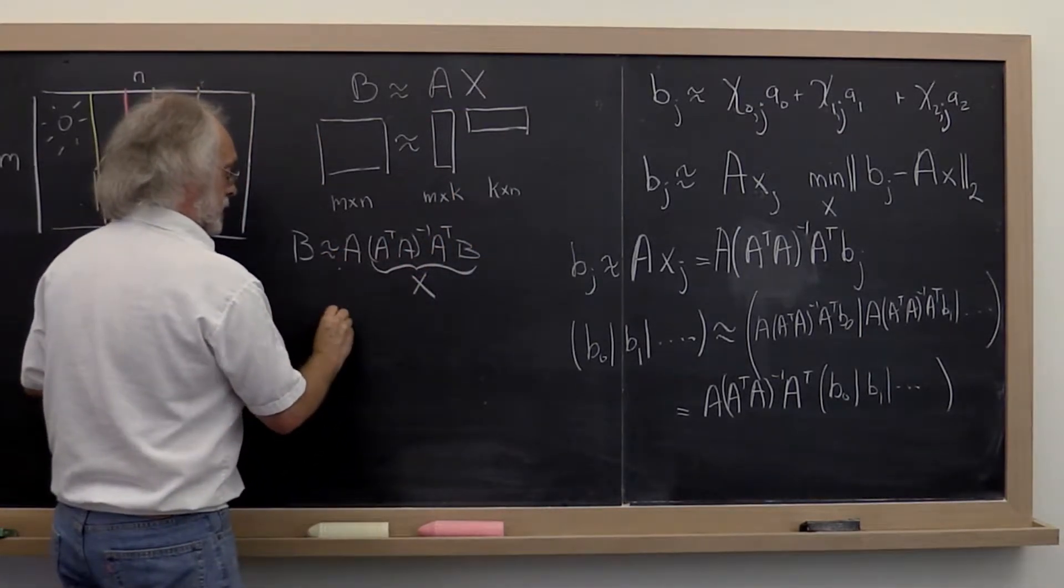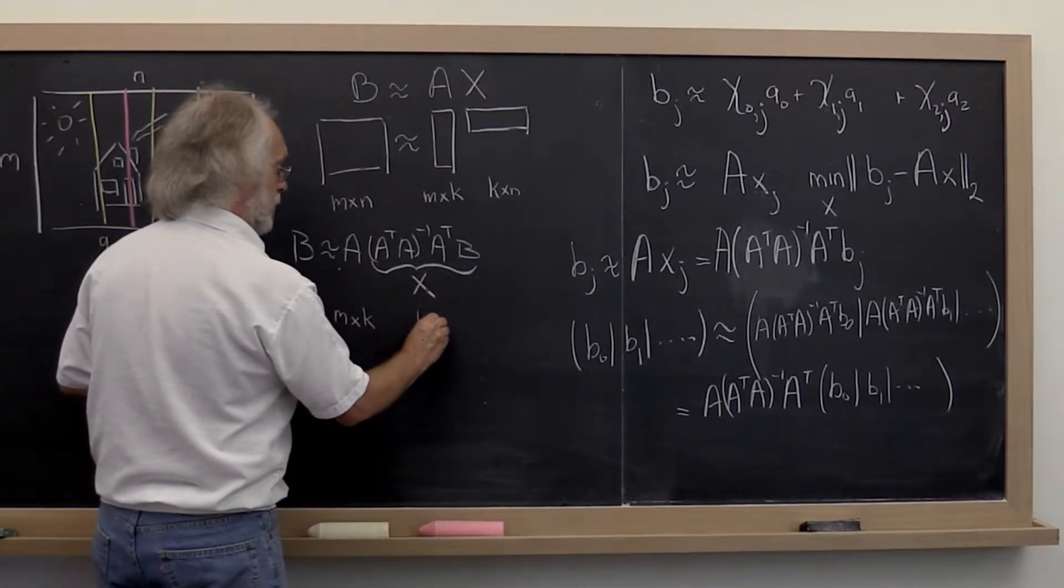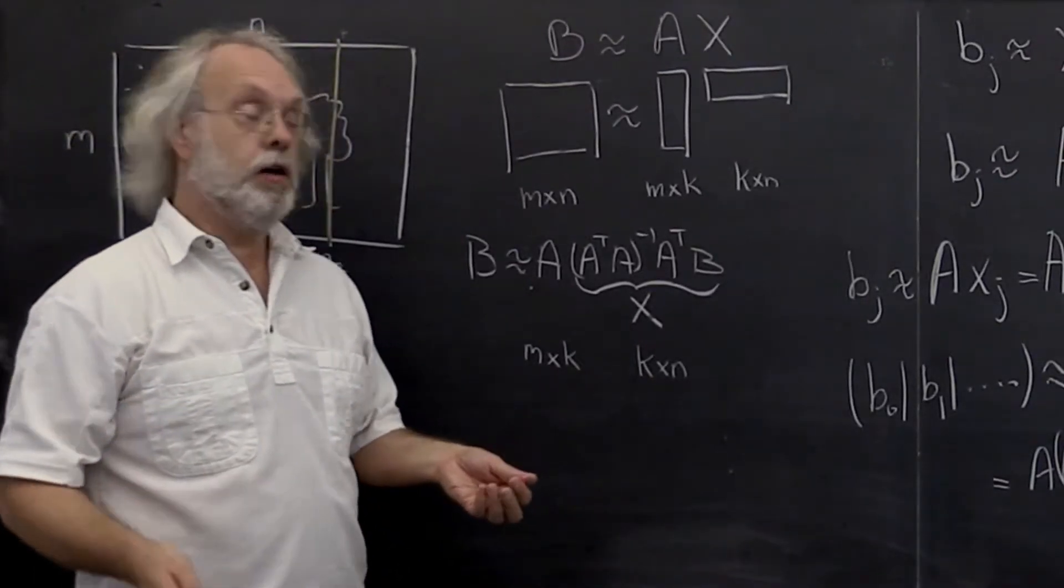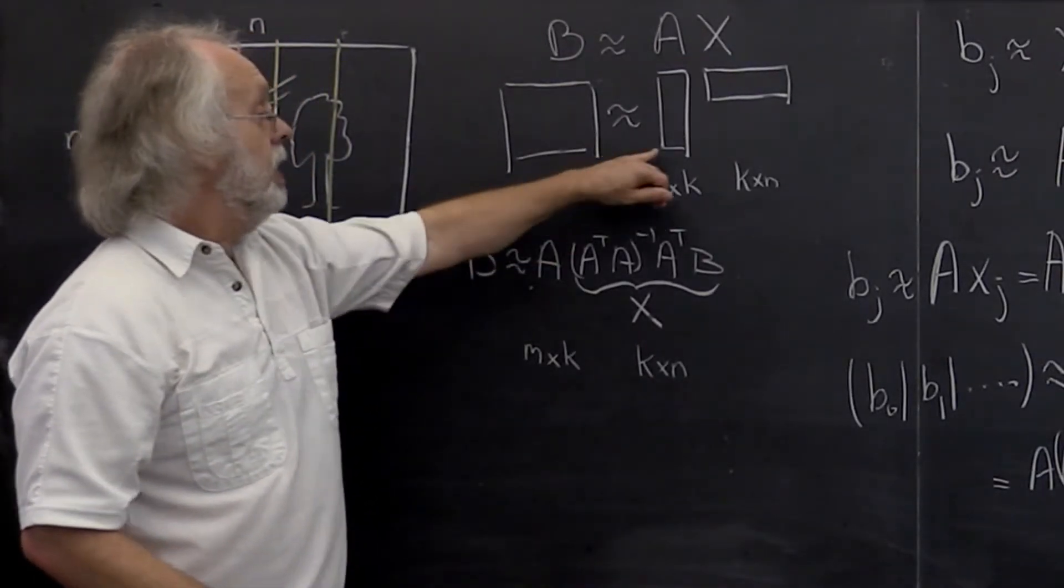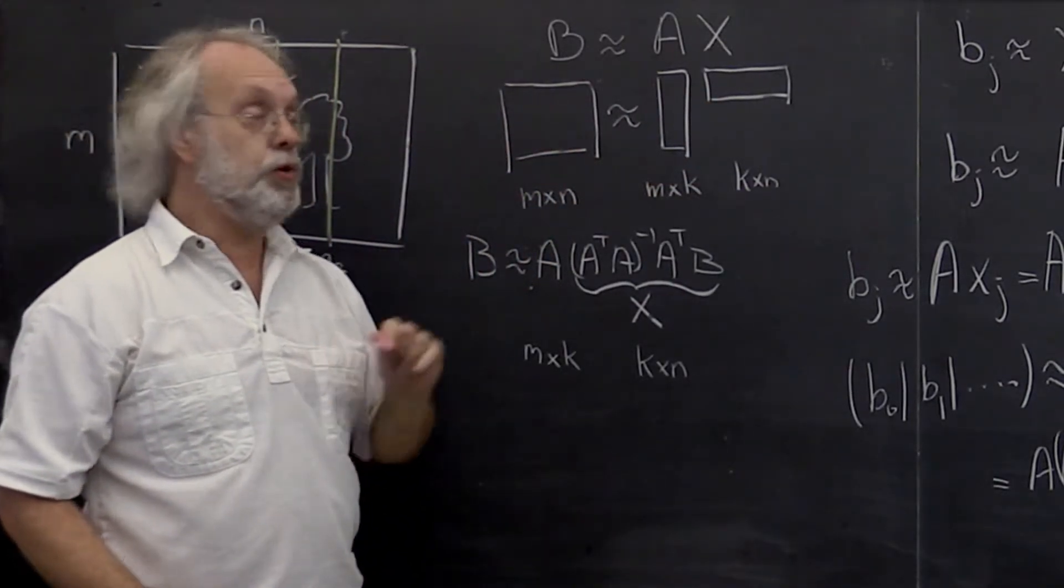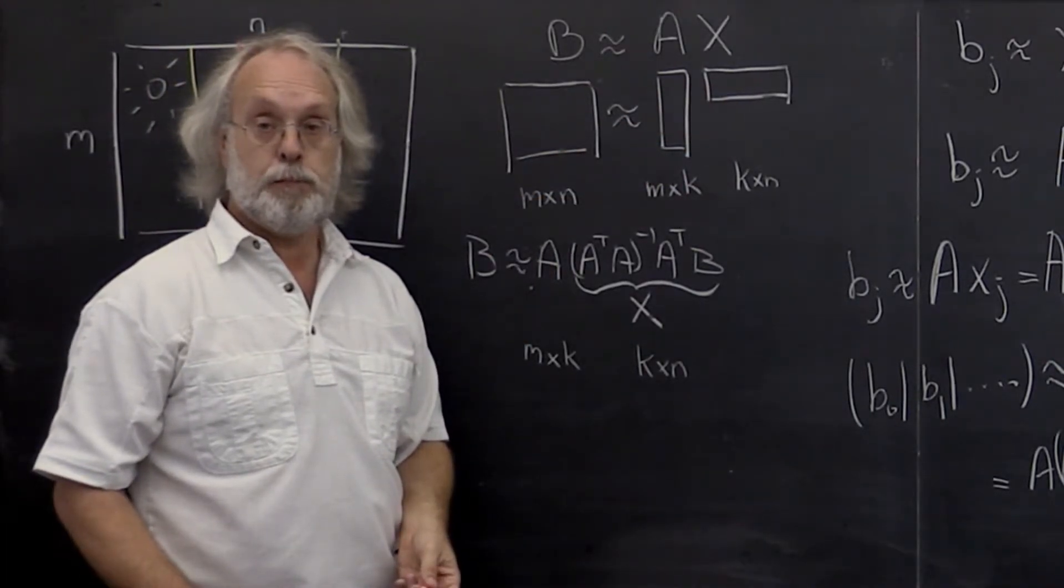This matrix is then M by K in general. This matrix is K by N. And what we have now is a formula for computing a rank K approximation to our picture. You can check that this is a rank K matrix.